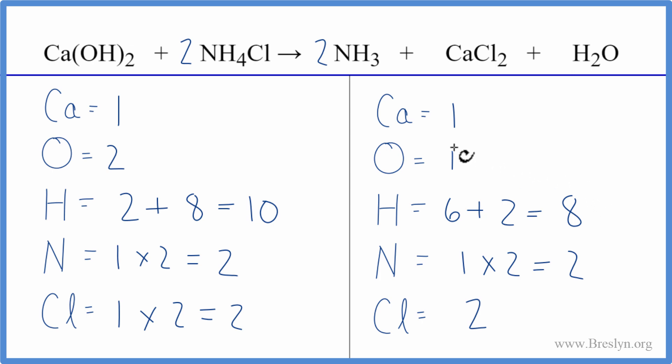Why don't we update the oxygens next and see how that works out? Because we could put a two in front of the H2O. That might even fix the hydrogens. Let's try it. So we have oxygens, one times two. That gives us two oxygens. Those are balanced.